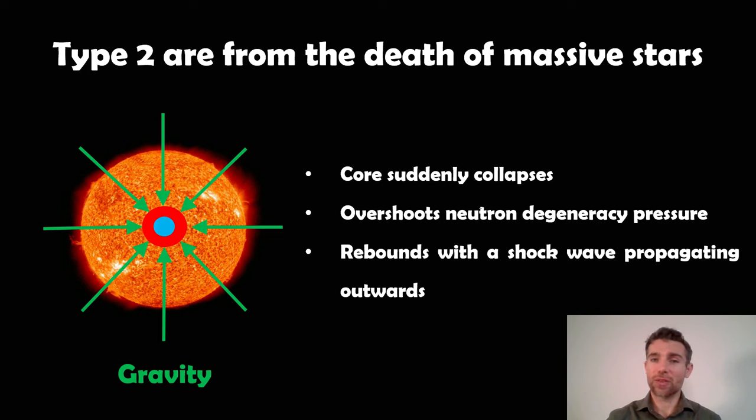A type 2 is different. This is not a thermonuclear explosion like a type 1a, this is a core collapse supernova. When a star reaches the end of its life, it's no longer fusing hydrogen or helium in its core. That core will suddenly collapse. There's no outward pressure holding it against the gravity anymore, so it collapses, it overshoots neutron degeneracy pressure, it has a rebound, and you get a shock wave which propagates out through the outer layers of the star. That accelerates the material and you get this ejected material which is the supernova which we actually detect.